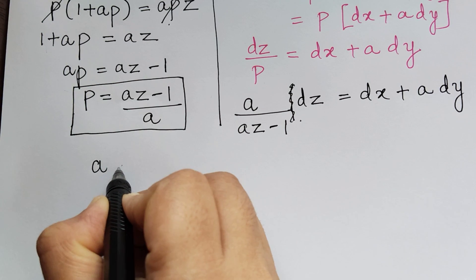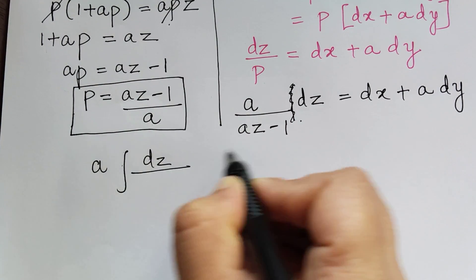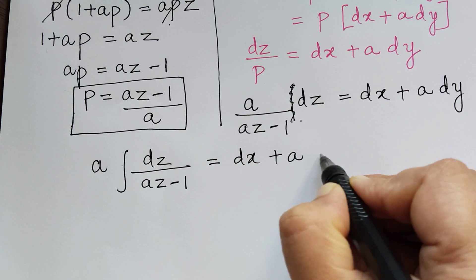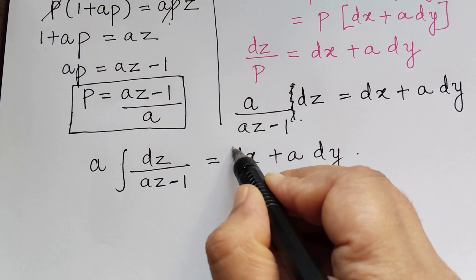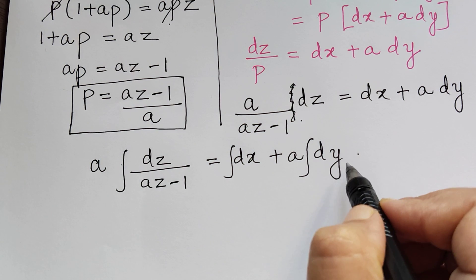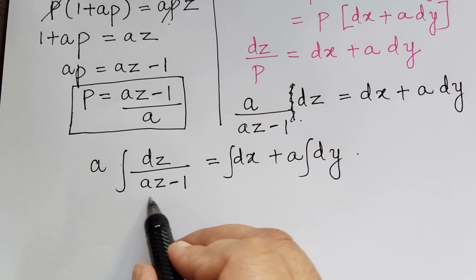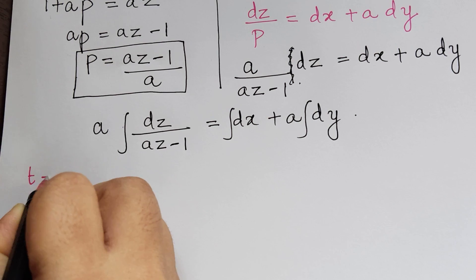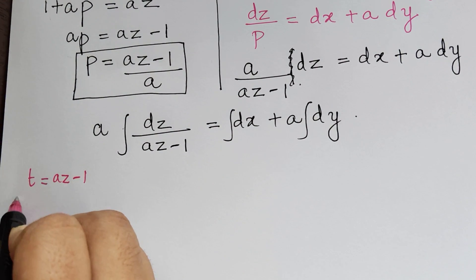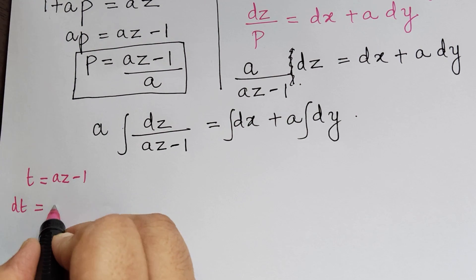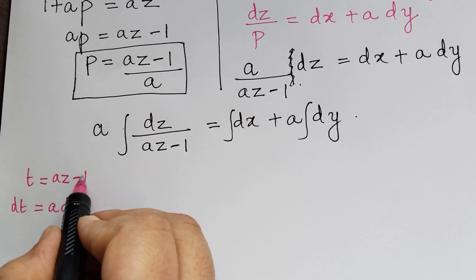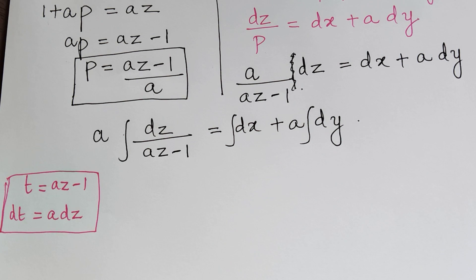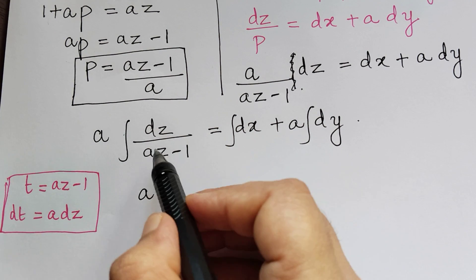Rewriting properly: a times the integral of dz/(az − 1) = integral of dx + a times integral of dy. To evaluate the left side, we make the substitution t = az − 1, so dt = a dz. Therefore a dz = dt, and the integral becomes integral of dt/t.